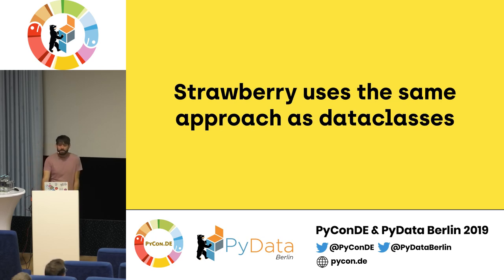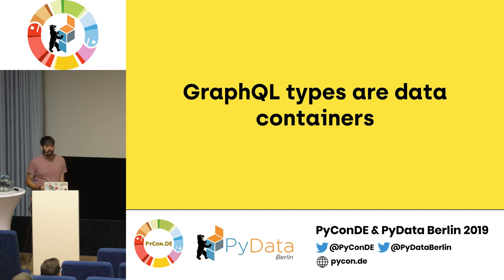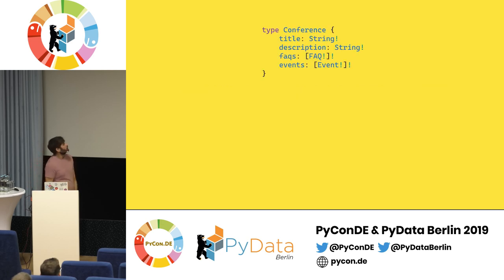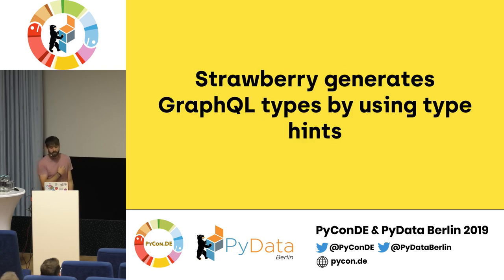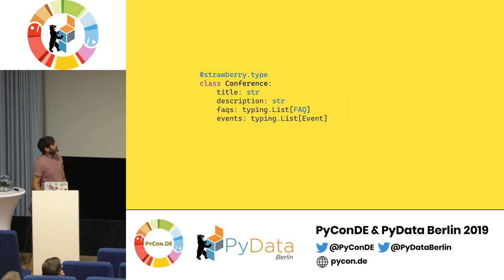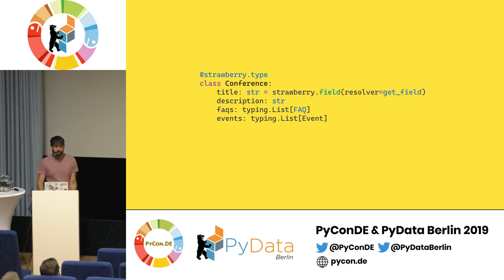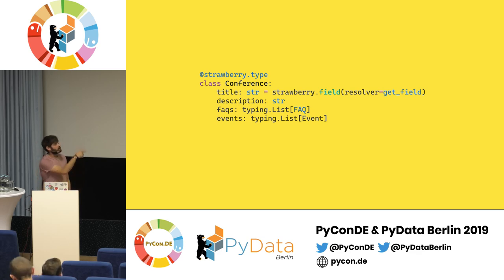But what about GraphQL? Strawberry uses the same approach as dataclasses. If you think about it, GraphQL types are data containers anyway — we have our Conference type which is just a bunch of fields with types associated. So in Strawberry, we use exactly the same approach as dataclasses. We have a decorator that's going to do a bunch of things on this class. Strawberry is going to generate the GraphQL types using type hints — it's going to fetch all the fields, see the types, and create the GraphQL types we can use for our API. For resolvers, we actually have two ways, but the easiest one is where you pass the Strawberry field with the resolver, and when you ask for that field on the API, that function is going to be called for you.